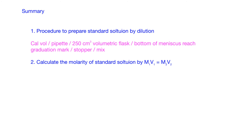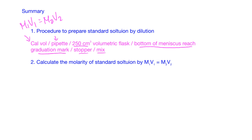In summary, to prepare a standard solution by dilution: calculate the volume first using M1V1 = M2V2. Remember you use a pipette to transfer the stock solution, and tell them what volume volumetric flask you use. Add water until the bottom of the meniscus reaches the graduation mark, and stopper the flask and mix it well. At the end, calculate the molarity one more time. Pay attention to effective communication - you must have complete sentences, no point form. That's all for this video. Bye-bye.